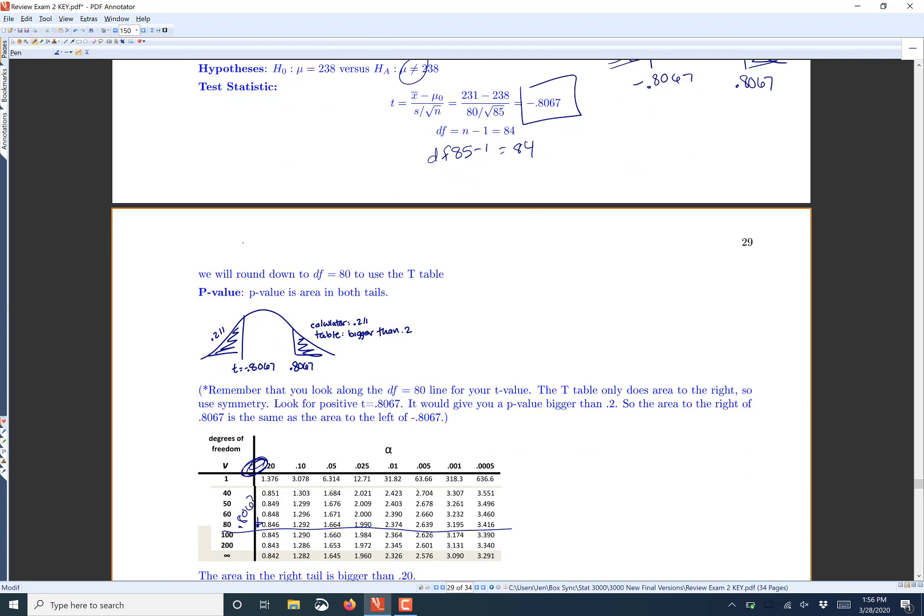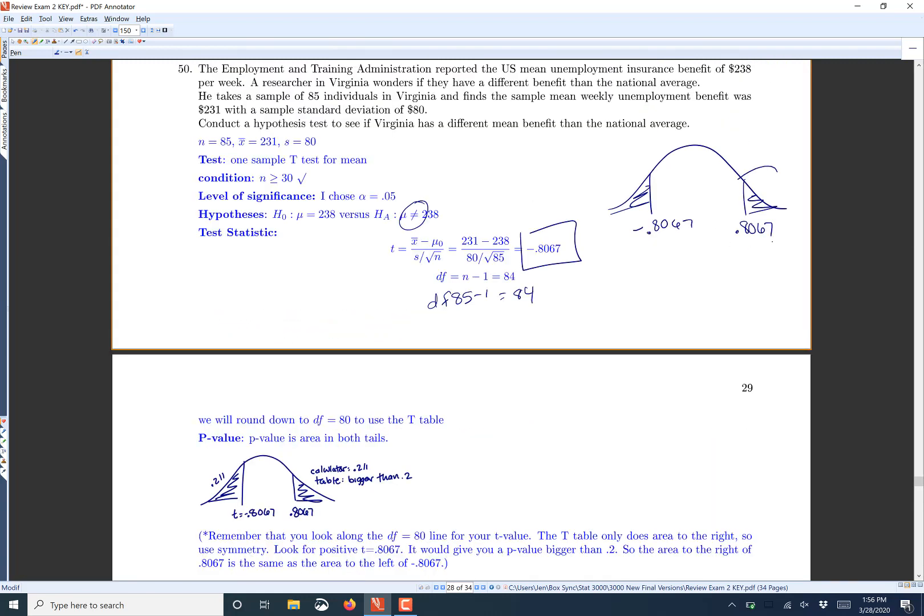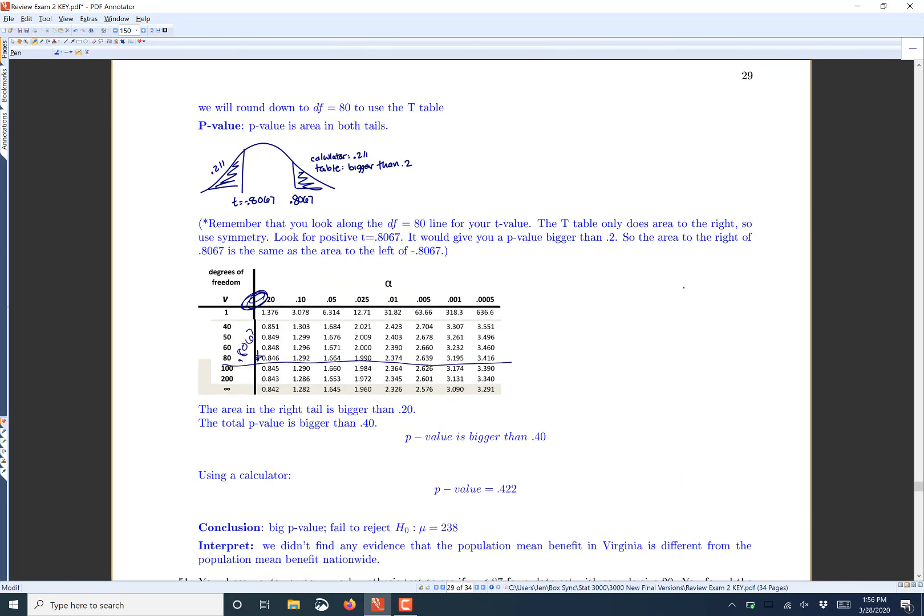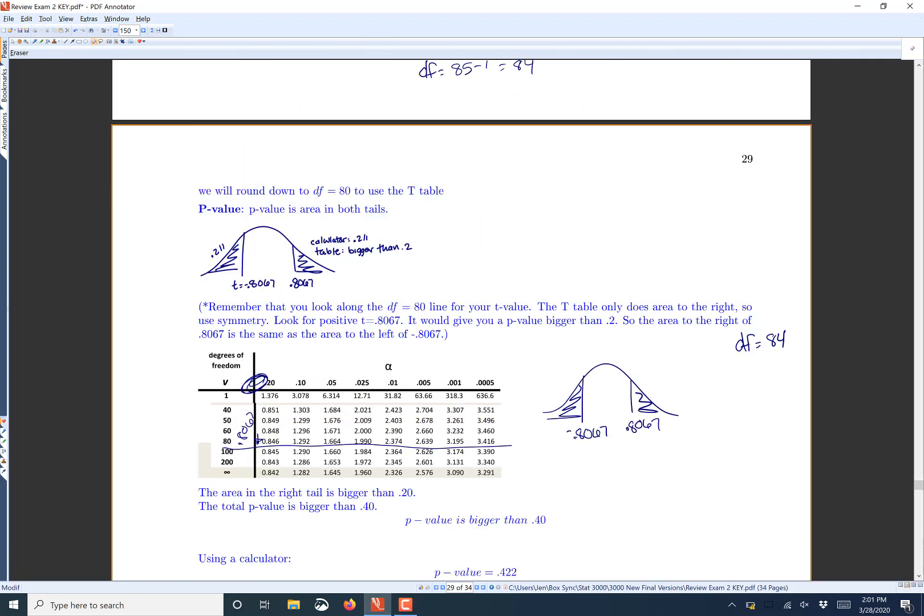So we're looking for the area. It'll be easier to find this area right here, the area to the right of 0.8067. So again, because of symmetry, the area to the left of negative 0.8067 is going to be the same as the area to the right of 0.8067. So you almost always have to use symmetry for the t-table because you only have that area to the right.